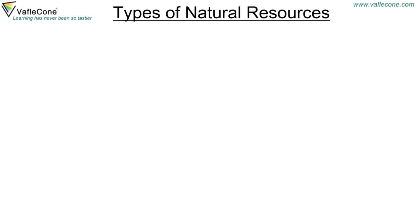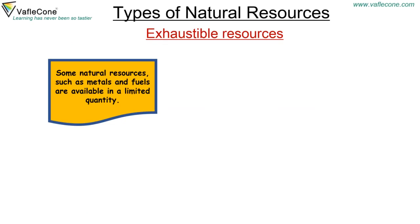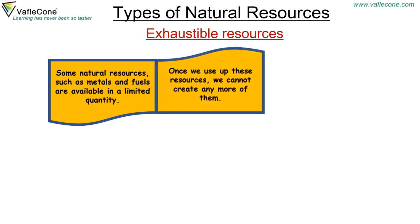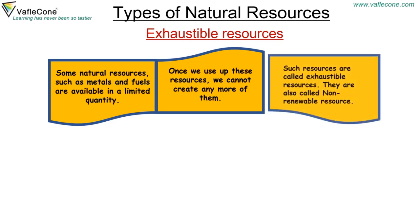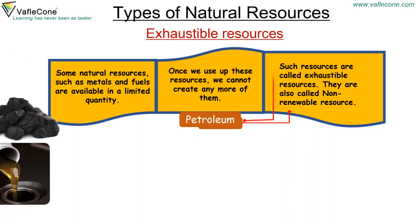Types of natural resources. Exhaustible resources: Some natural resources such as metals and fuels are available in a limited quantity. Once we use up these resources we cannot create any more of them. Such resources are called exhaustible resources, also called non-renewable resources.